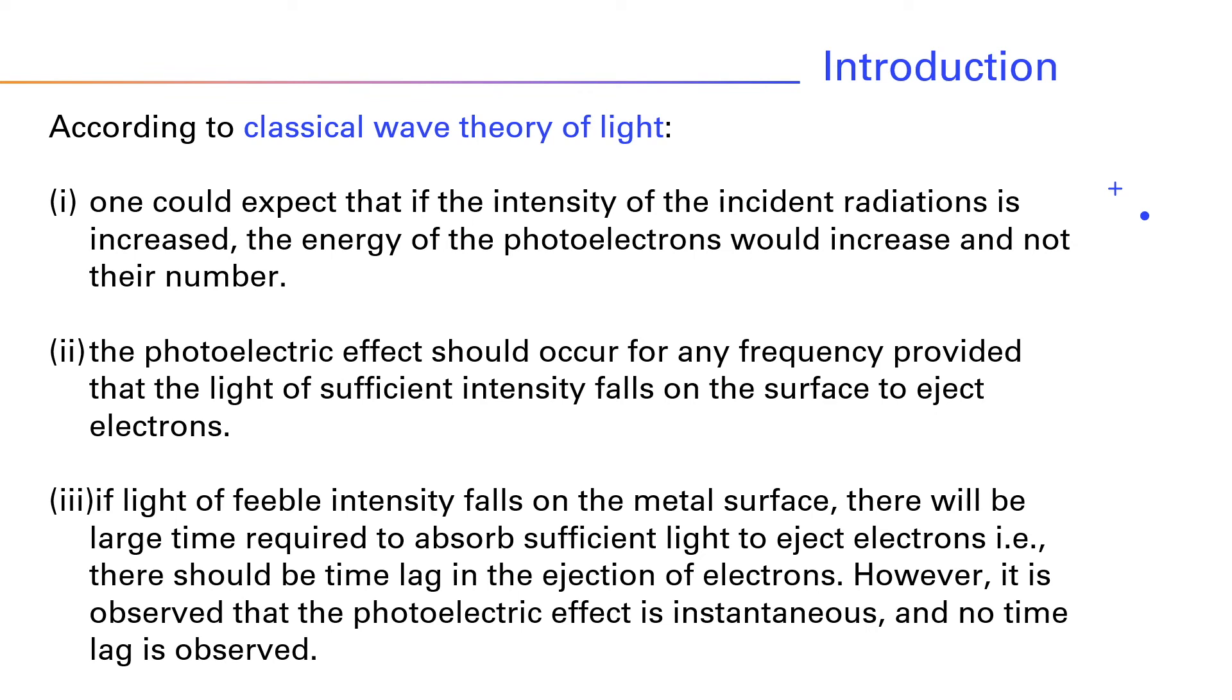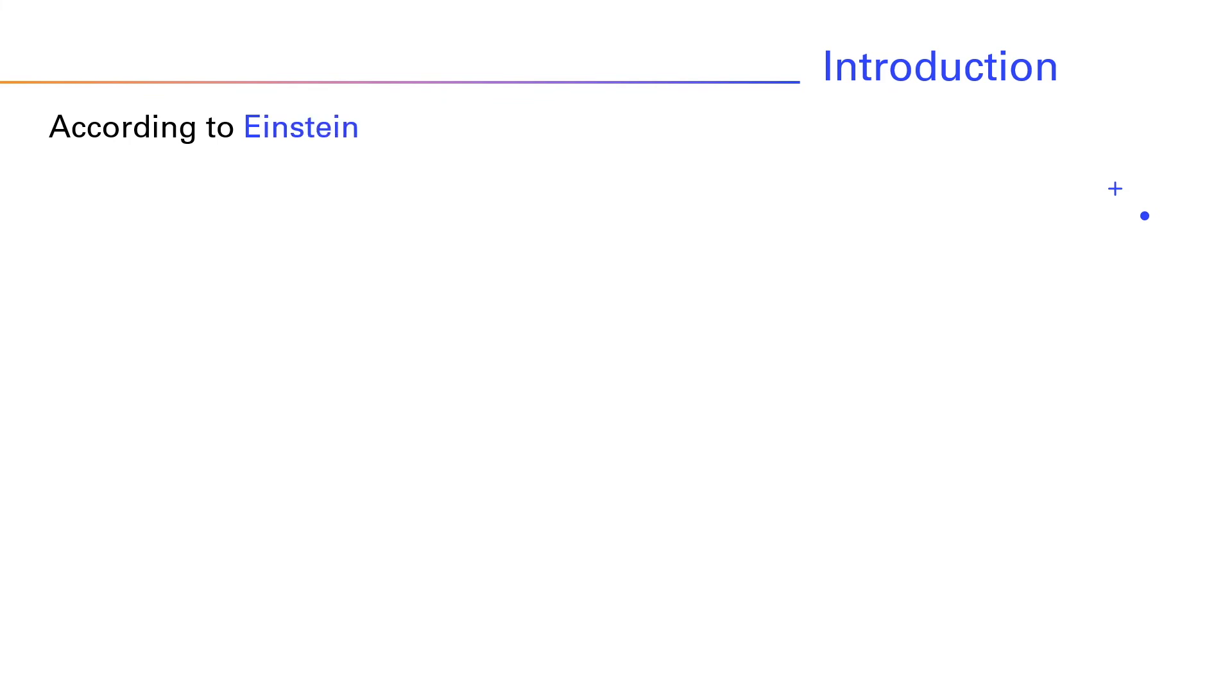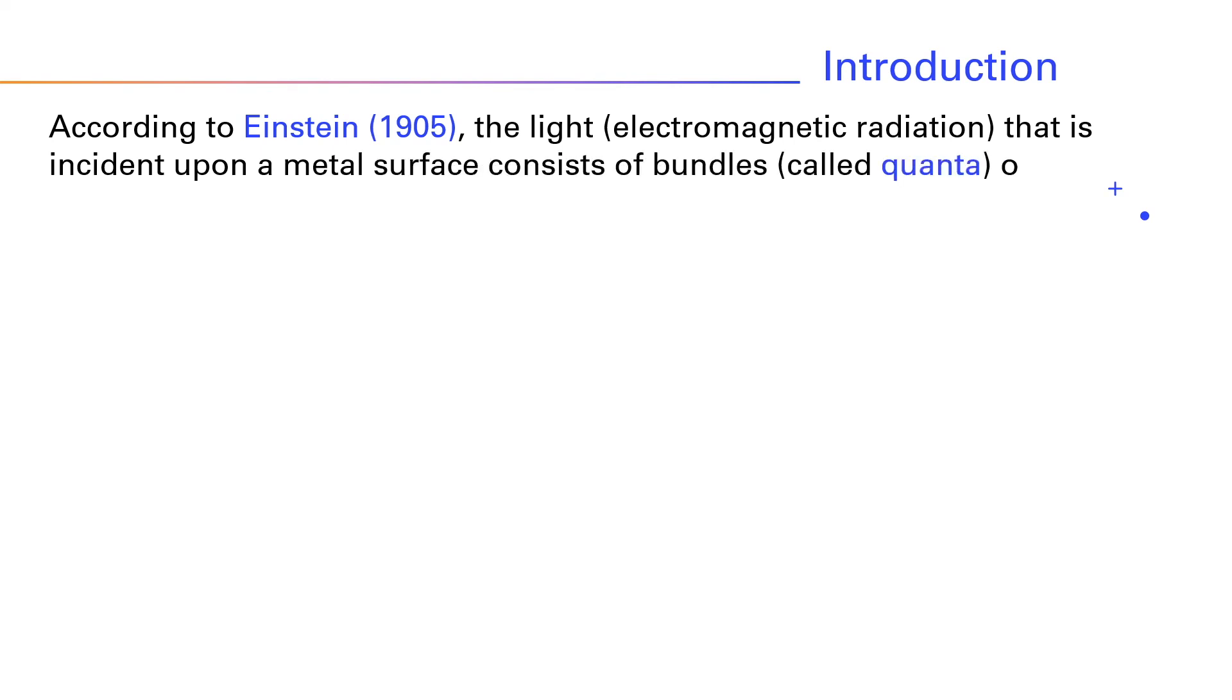In order to provide satisfactory explanation for Lenard's experimental observations, Einstein proposed a new revolutionary theory in 1905. According to him, the light (electromagnetic radiation) that is incident upon a metal surface consists of bundles called quanta of energy, which later came to be called photons.